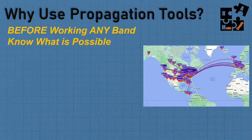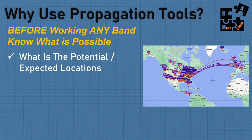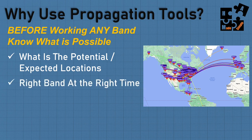So why use propagation tools? Before working any band, know what's possible. For example, trying to reach from Raleigh to Portland, Oregon — how do I know if it's workable? There are tools that will show you whether or not the band conditions are workable. What are the potential locations I can reach based on the band and time of day? My motto is: right band, at the right time, to the right location.